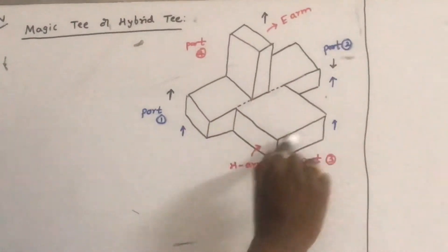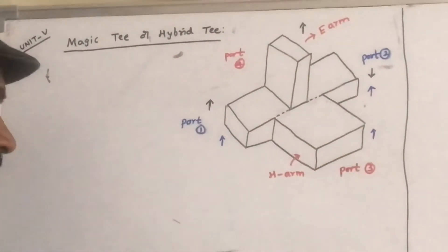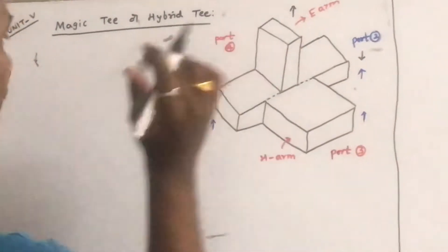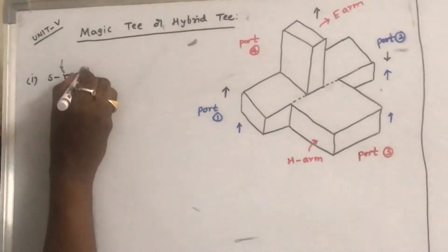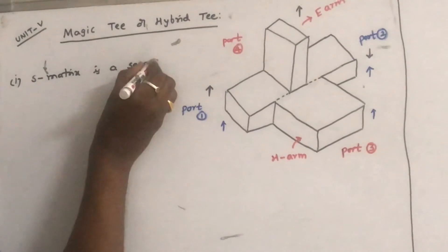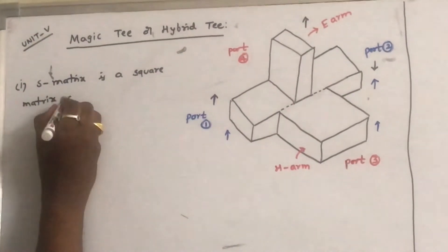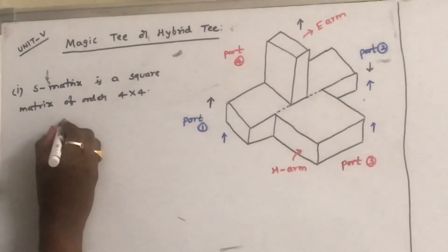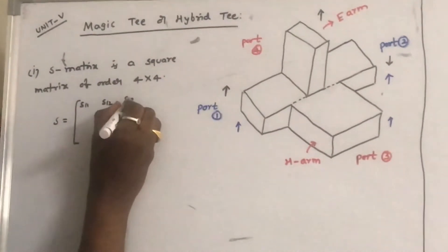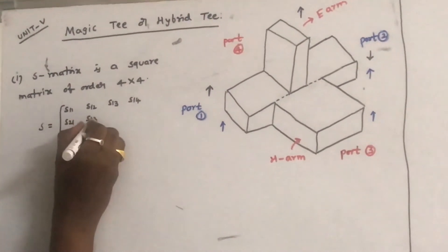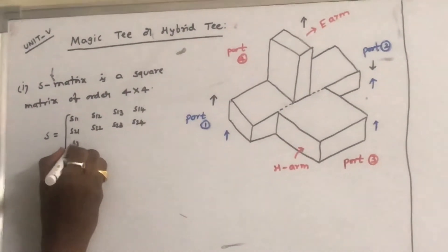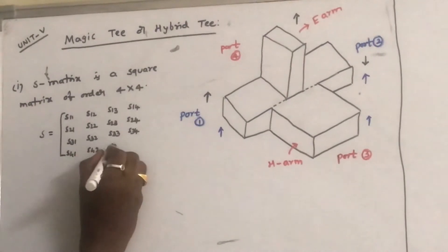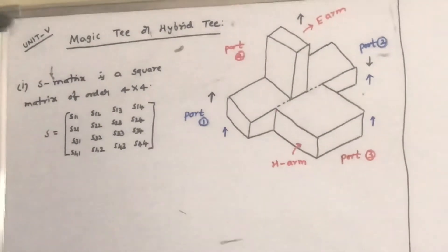Let us define the S-matrix of this Magic T, which will explain all the properties. Since it is a 4-port device, the S-matrix is a square matrix of order 4×4. So we write the S-matrix as S11, S12, S13, S14, S21, S22, S23, S24, S31, S32, S33, S34, S41, S42, S43, and S44.